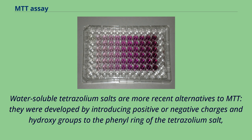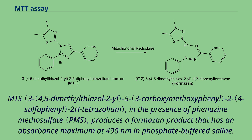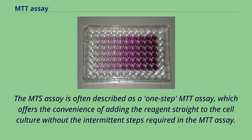Water-soluble tetrazolium salts are more recent alternatives to MTT. They were developed by introducing positive or negative charges and hydroxy groups to the phenyl ring of the tetrazolium salt, or with sulfonate groups added directly or indirectly to the phenyl ring. MTS (5-(2,2H-tetrazolium)), in the presence of phenazine methosulfate, produces a formazan product with an absorbance maximum at 490 nanometers in phosphate-buffered saline. The MTS assay is often described as a one-step MTT assay, which offers the convenience of adding the reagent straight to the cell culture without the intermittent steps required in the MTT assay.